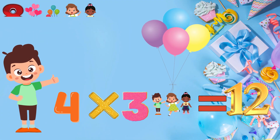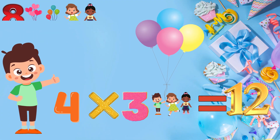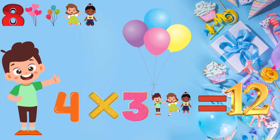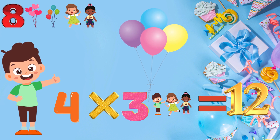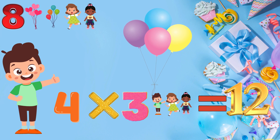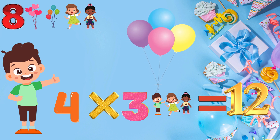Isha used 8 balloons and then used 4 more for her third friend, totaling 12 balloons. Multiplication is adding the same number multiple times. So 4 multiplied by 3 equals 12 in this scenario.